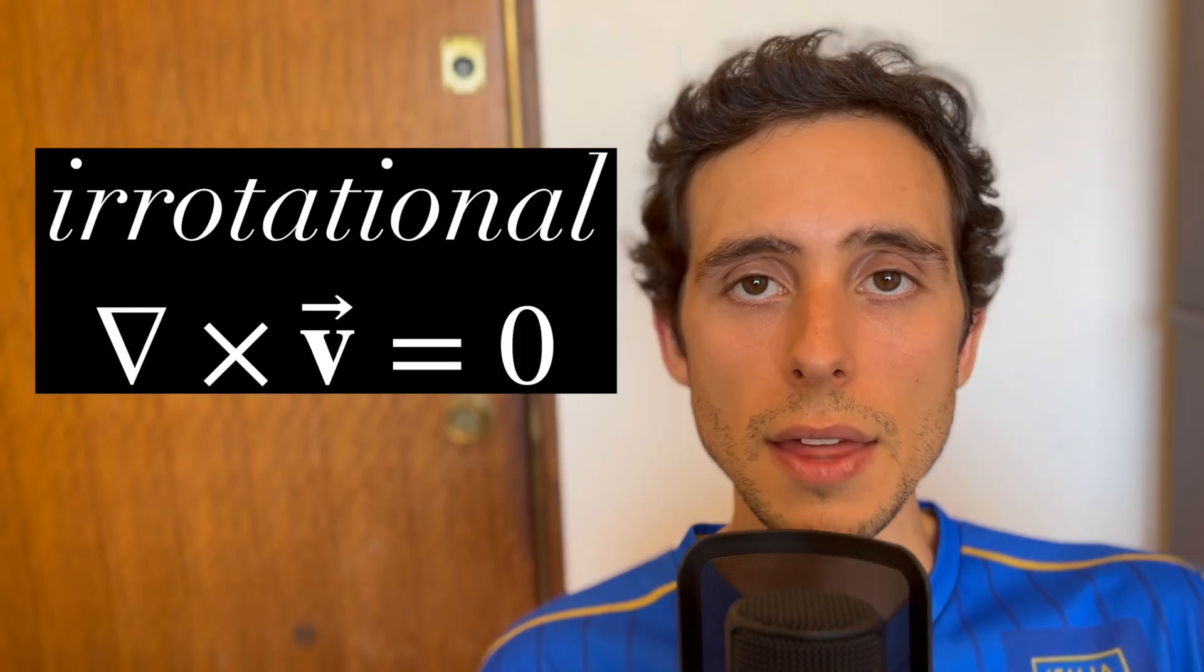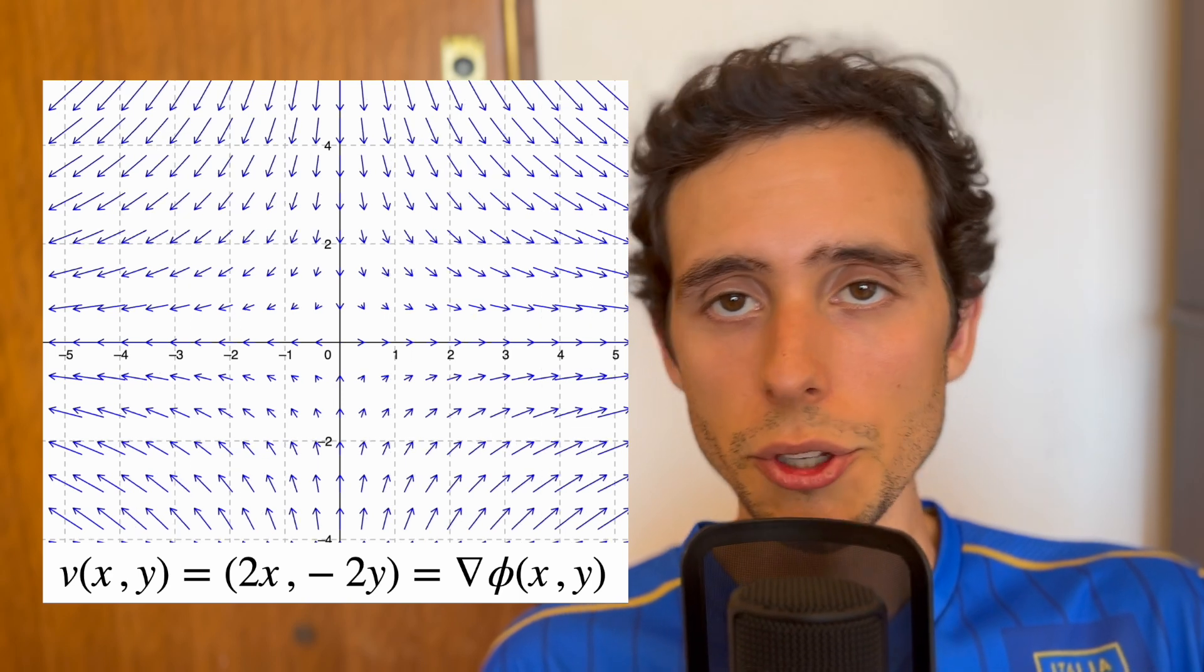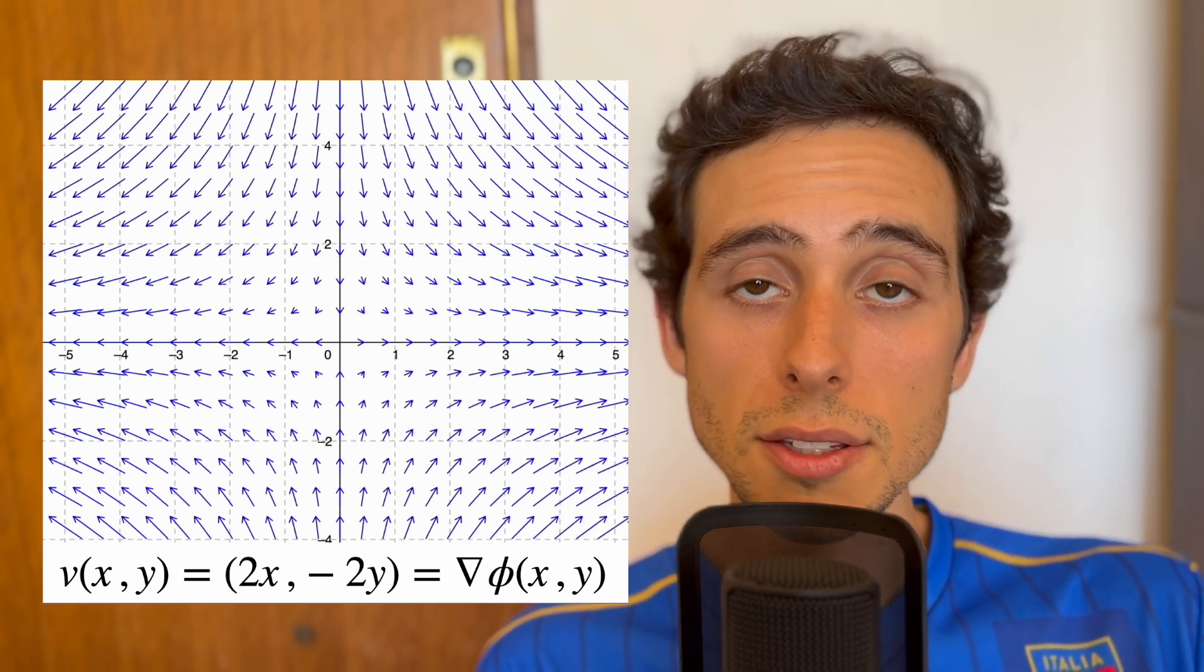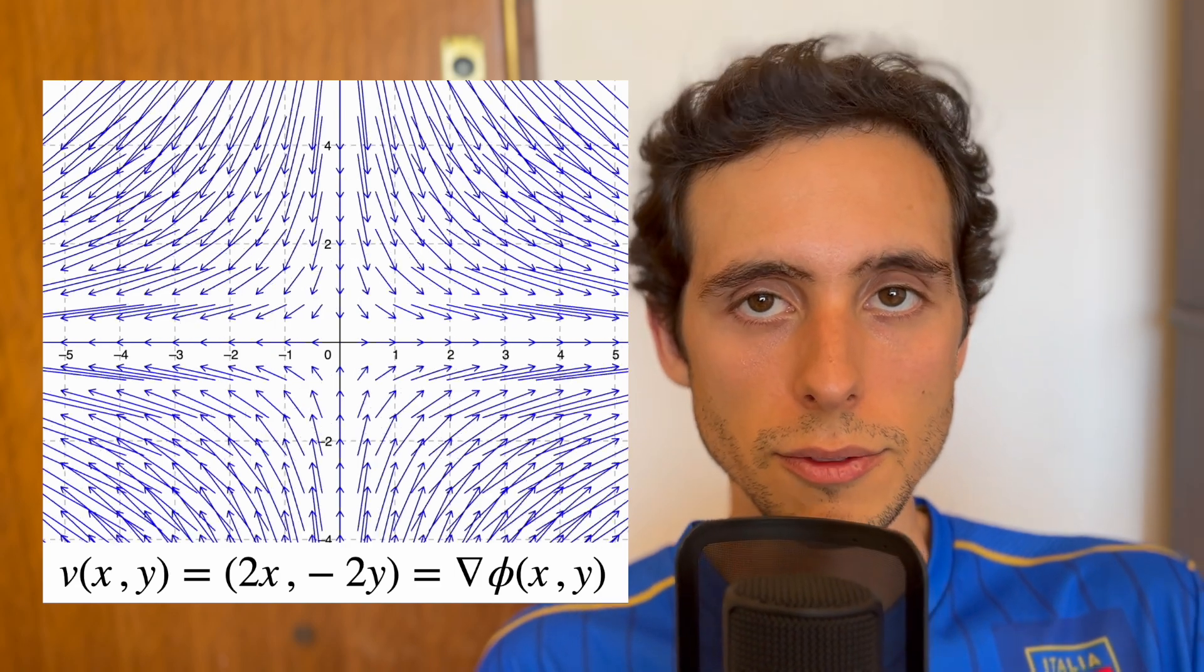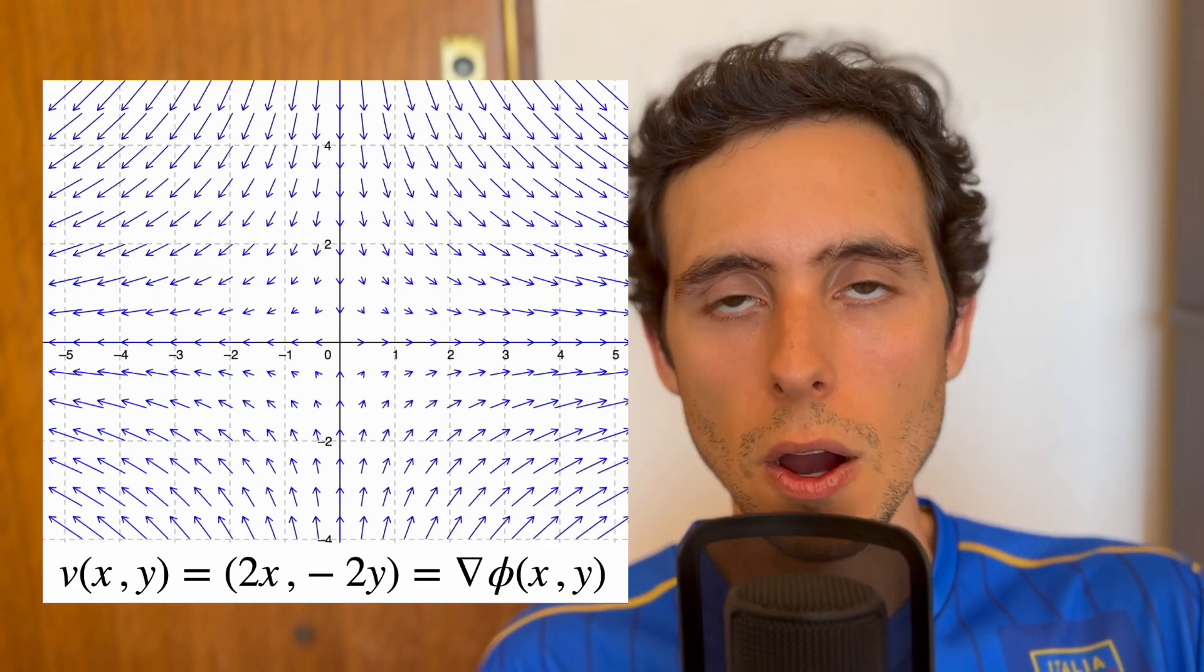If the flow is irrotational, then the curl of the velocity field is zero. And the velocity field here, which is a vector field, is defined as the gradient of the velocity potential phi, such that the velocity potential phi is a scalar field on the complex plane.